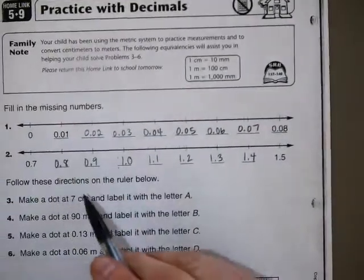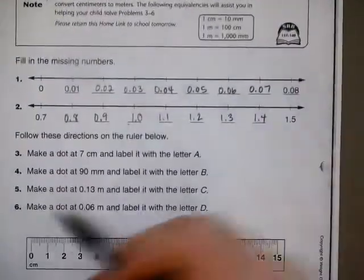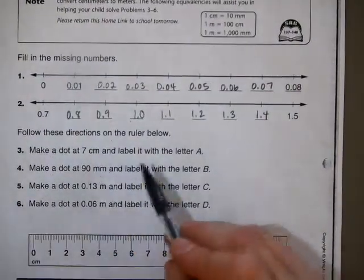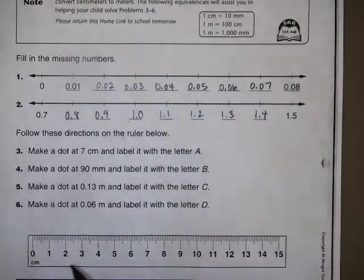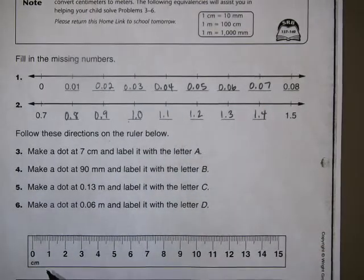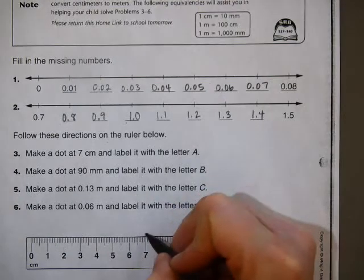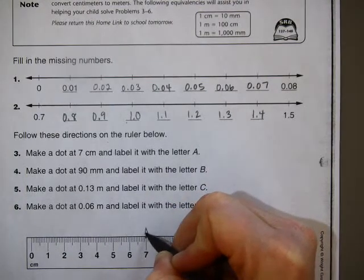Now, follow these directions on the ruler below. Make a dot at 7 centimeters and label it with the letter A. Well, I know this ruler is in centimeters, so I have to find 7. There's a dot. I'm going to label it with A.